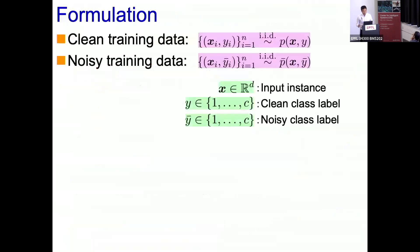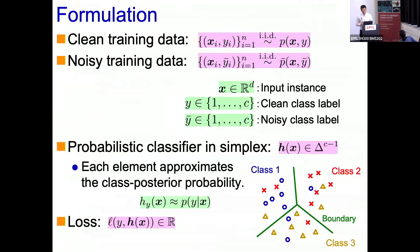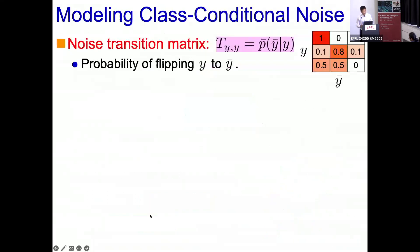Let me give some brief technical background. Let x and y be clean training data and x and y bar be their noisy versions. Consider a c-class classification problem. We consider a probabilistic classifier h of x in the simplex — a c minus one vector where all elements are non-negative and sum to one, and each element approximates the class posterior probability p of y given x. We consider some loss function.